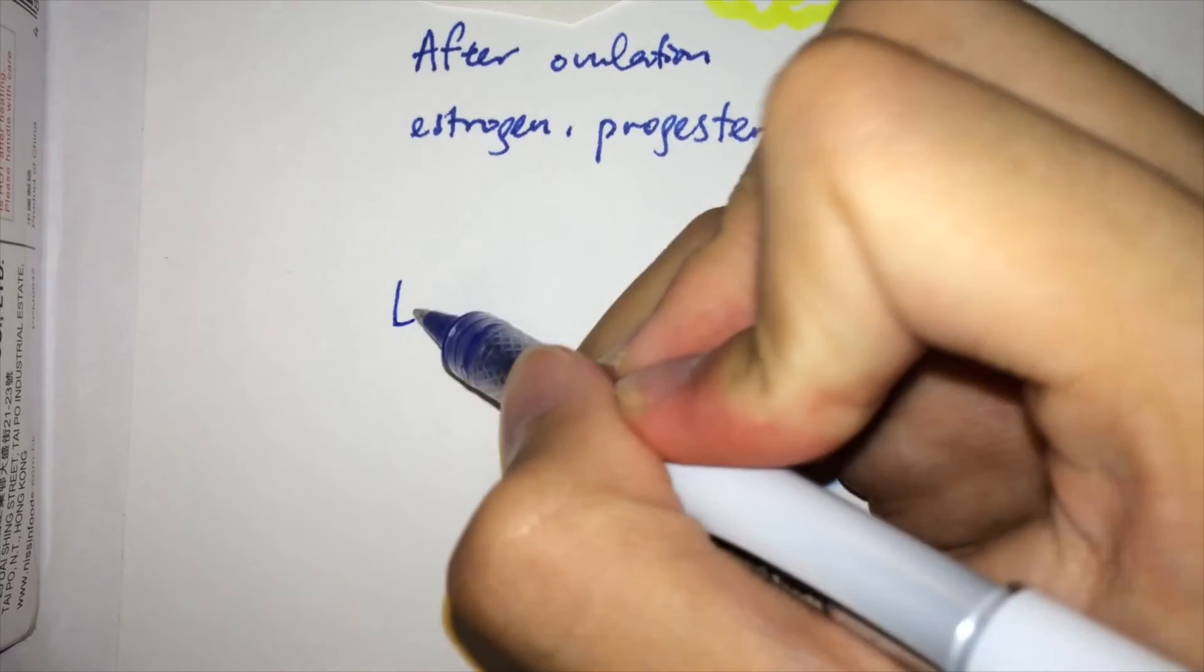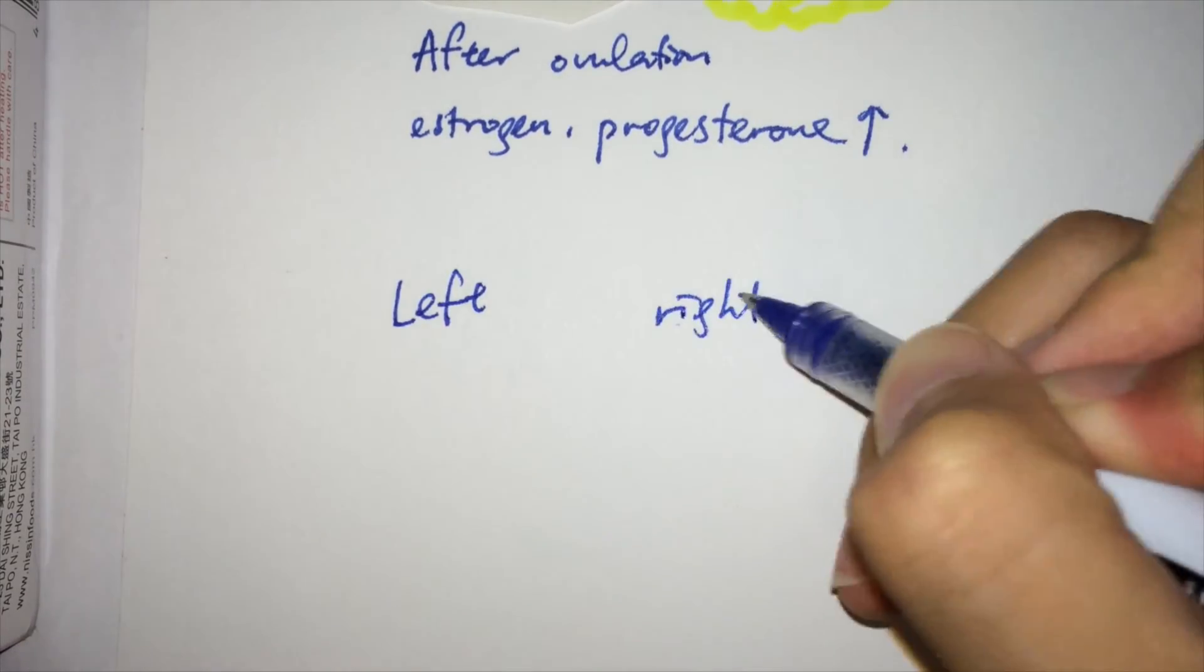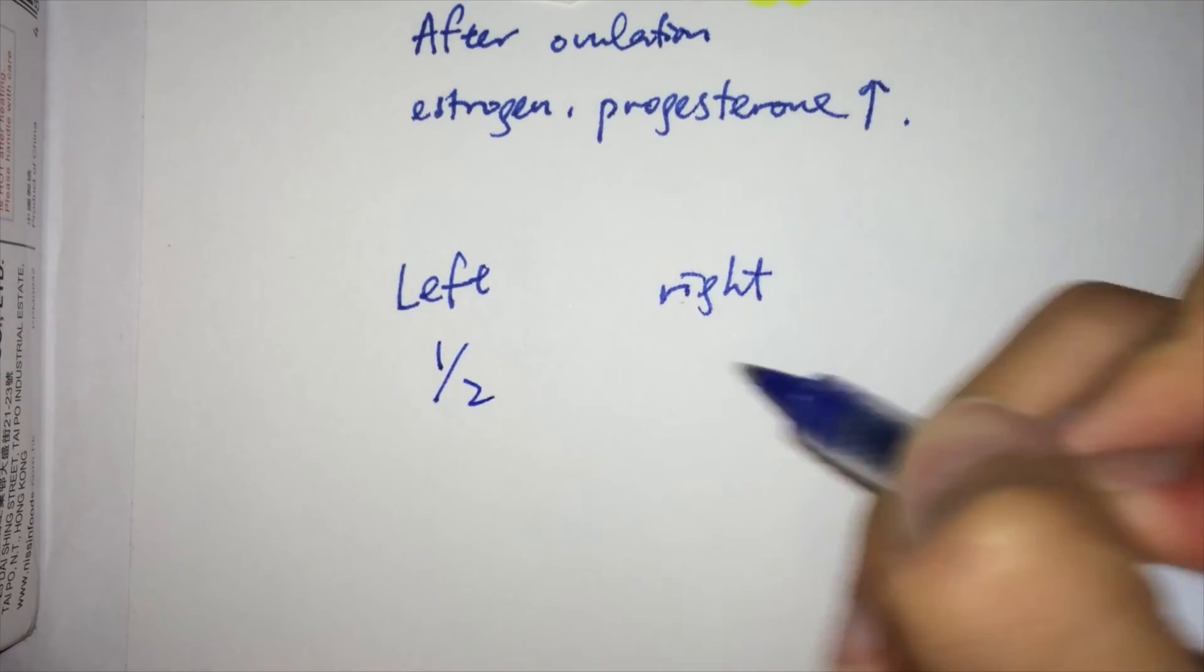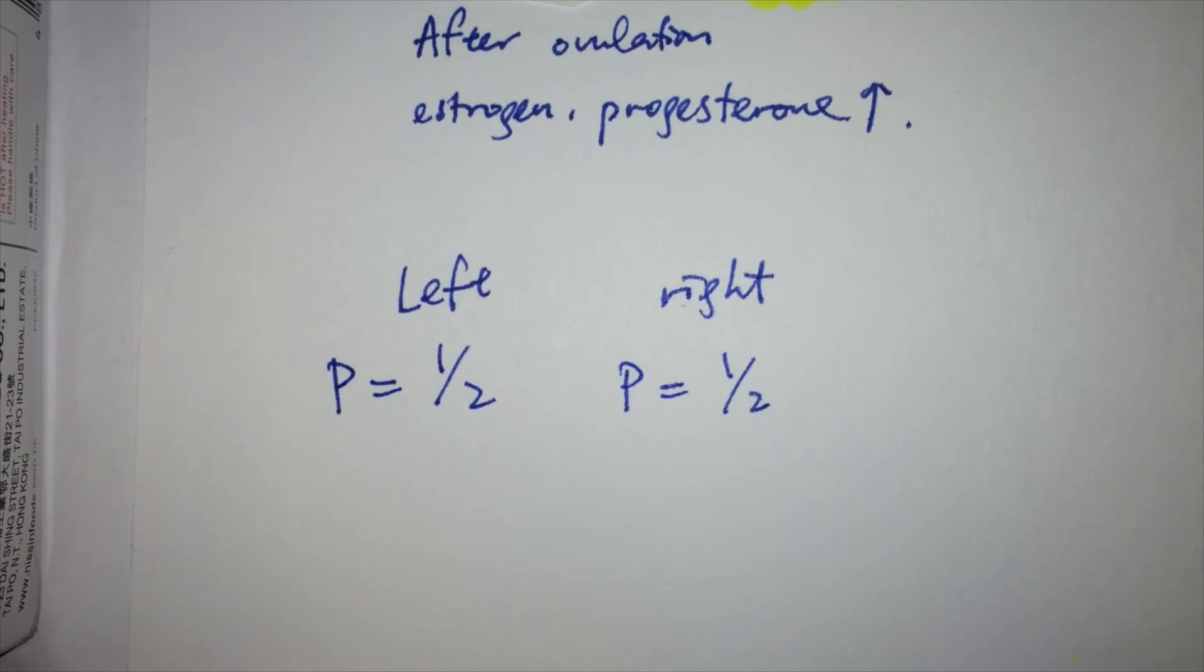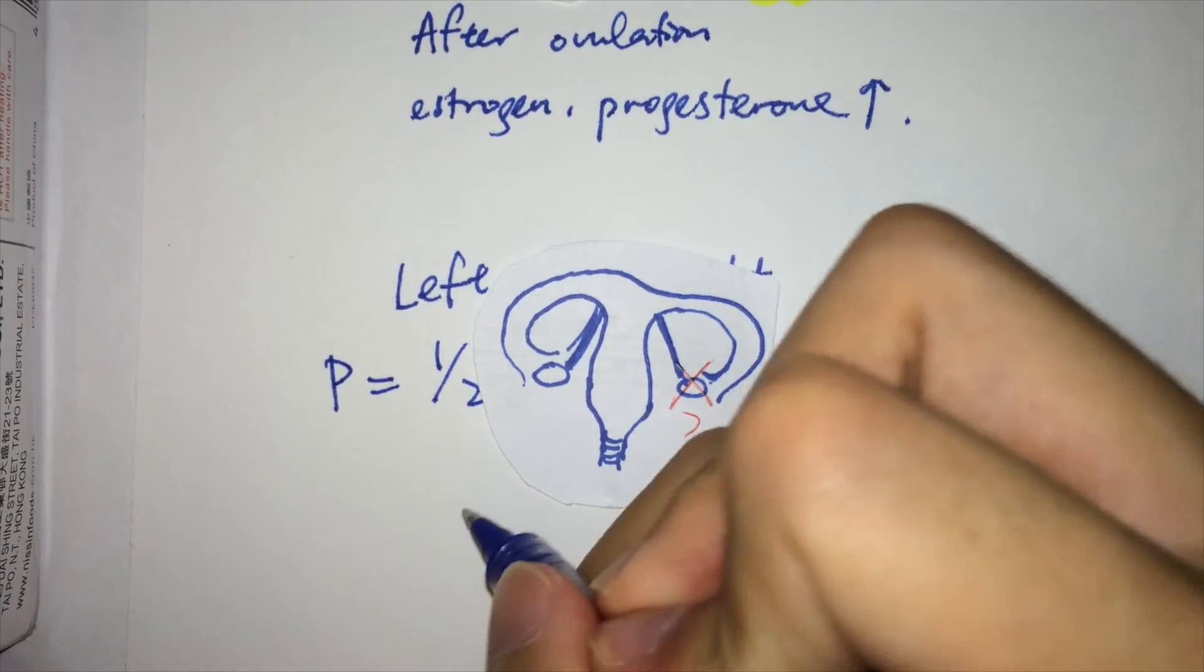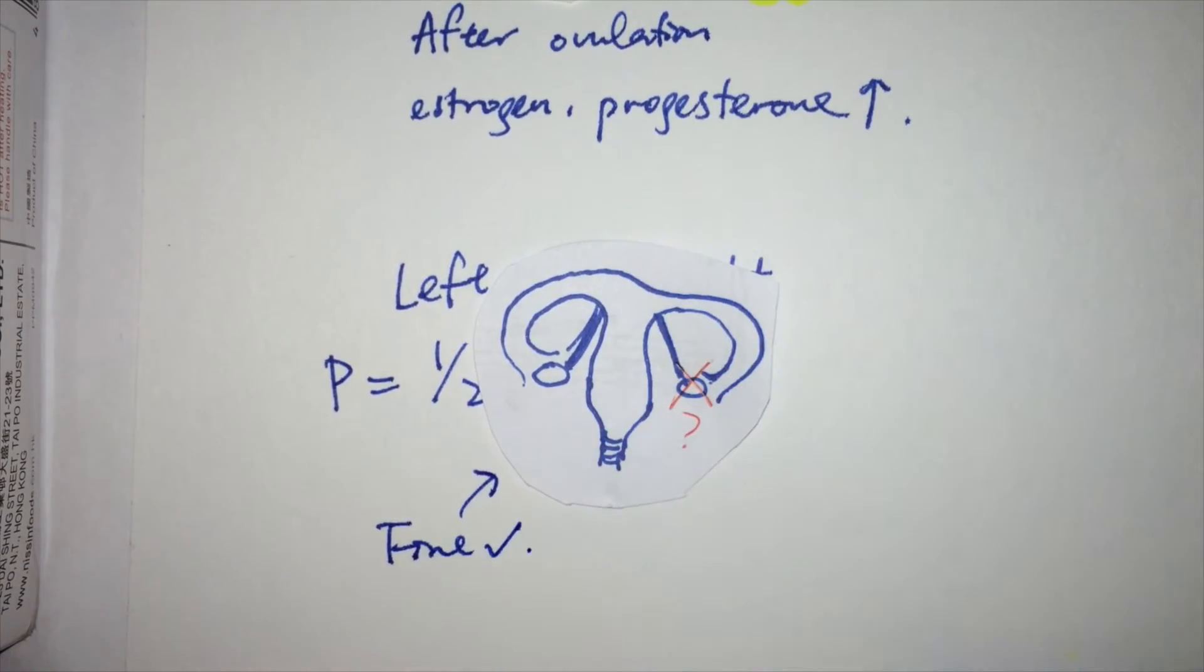So it is actually a 50-50 chance which ovary produces an egg first, then suppresses itself and the other ovary to not ovulate. Hence, if one of the ovaries is absent, the whole cycle would work just fine.